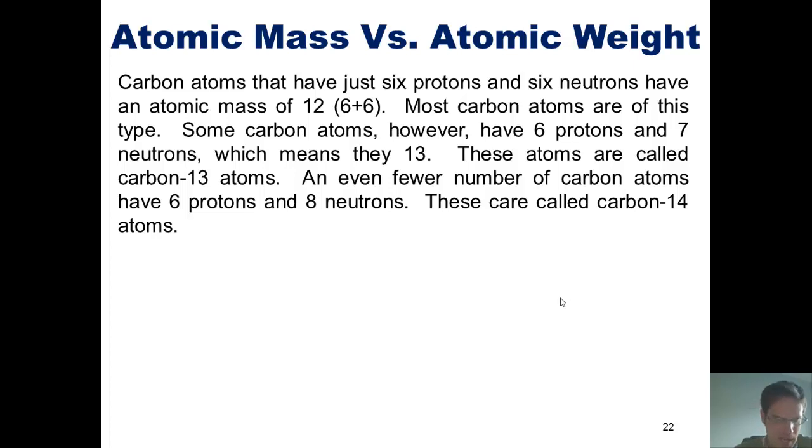Some carbon atoms, however, have 6 protons and 7 neutrons, which makes them weigh 13. These atoms are called carbon-13 atoms. An even fewer number of carbon atoms have 6 protons and 8 neutrons. These are called carbon-14 atoms.